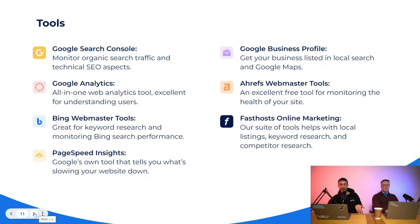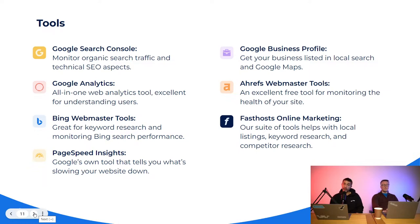AI is throwing a spanner in the works to some extent, because we don't really know what it's going to do to traditional search engine rankings. Bing is probably slightly ahead of Google in AI functionality at the moment, so there's a good chance they'll start gaining market share just because their implementation of ChatGPT into the search engine is really good. We don't really know what that's going to look like yet, but it's a really interesting topic to keep on top of — it's the start of a new era.